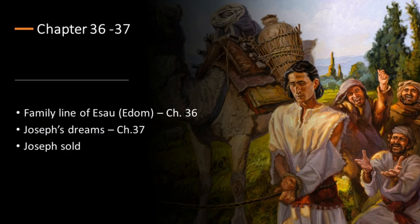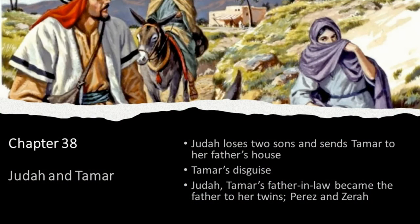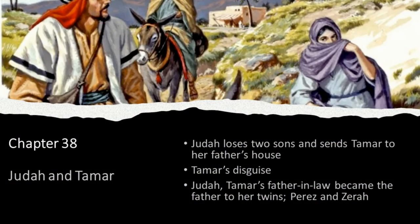In chapter 36, the family line of Esau is listed. Chapter 37 introduces Joseph — we know about the dreams he had and how he was sold into slavery. Chapter 38 tells the spectacular story of Judah and his daughter-in-law Tamar. Judah had three sons; two married Tamar and died. He kept his last son from marrying her and told her to return to her father's house. Tamar then disguised herself, Judah slept with her, and he became the father of her twins Perez and Zerah.